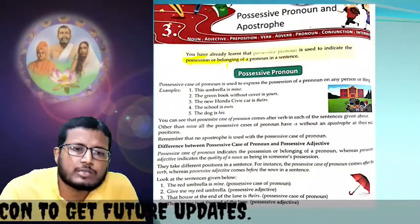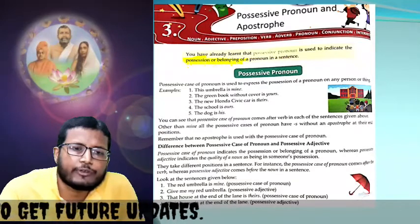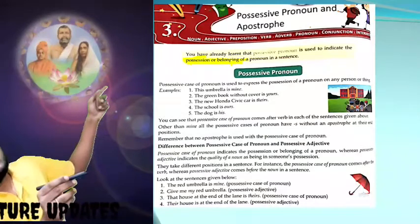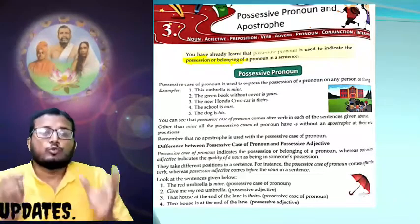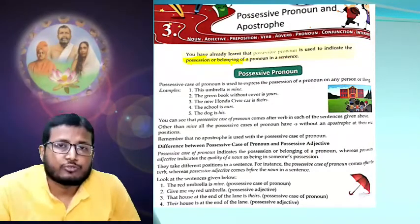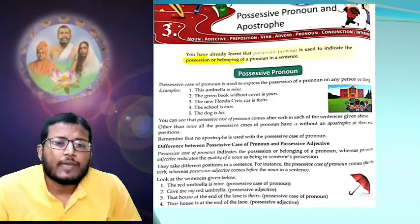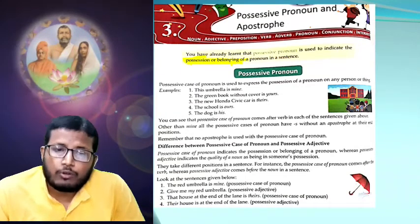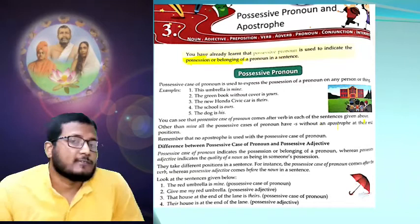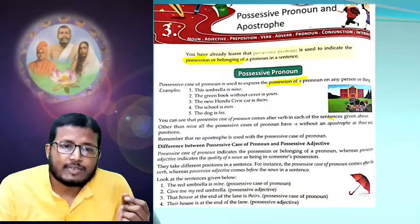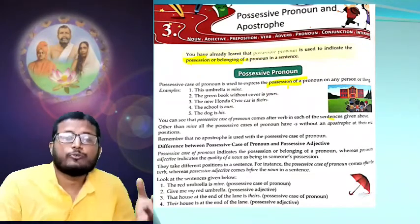The two words — possession and belonging — are very important. You should note them down. These two words are very important to understand about possessive pronouns and apostrophe throughout the chapter. The definition: possessive case of pronoun is used to express the possession of pronoun on any person or thing. You should highlight the word 'position' — it will come again and again in this chapter.